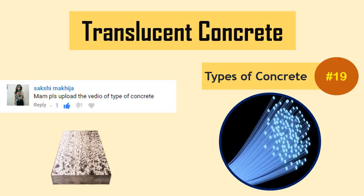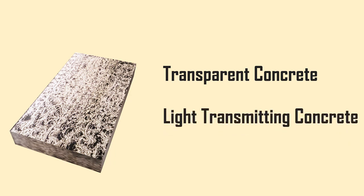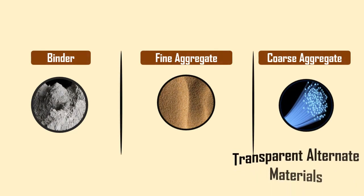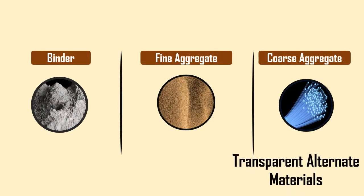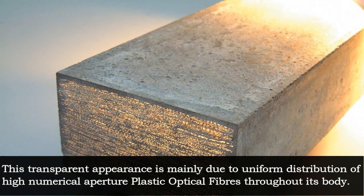Translucent Concrete is also called transparent concrete or light transmitting concrete. It is achieved by replacing aggregates with transparent alternate materials. This transparent appearance is mainly due to uniform distribution of high numerical aperture plastic optical fibers throughout its body.